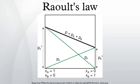The total pressure above the solution of A and B would be P_total equals P_A_star x_A plus P_B_star x_B, since the sum of the mole fractions is equal to one. This is a linear function of the mole fraction, as shown in the graph.